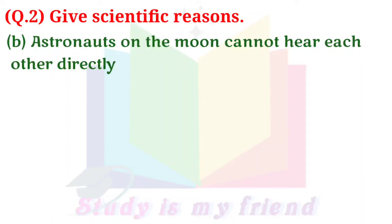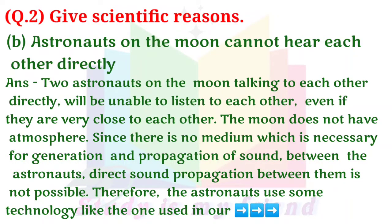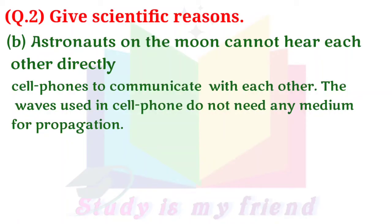B. Astronauts on the moon cannot hear each other directly. Answer: Two astronauts on the moon talking to each other directly will be unable to listen to each other even if they are very close to each other. The moon does not have atmosphere. Since there is no medium, which is necessary for generation and propagation of sound between the astronauts, direct sound propagation between them is not possible. Therefore, the astronauts use some technology like the one used in our cell phones to communicate with each other. The waves used in cell phones do not need any medium for propagation.